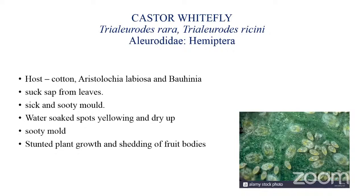The next pest is the castor whitefly, Trialeurodes ricini. It is also known to attack cotton. Both nymphs and adults suck sap from the leaves, making the leaves appear sick. Sooty mould develops when whitefly infestation is severe. Water-soaked spots appear on the leaves, which gradually become yellow and dry up. Plant growth is stunted in severe cases and shedding of fruiting bodies is also observed.